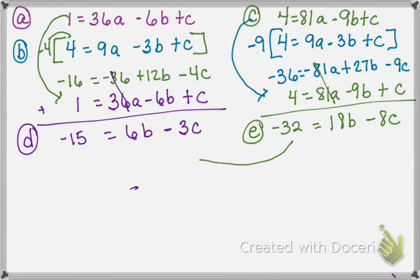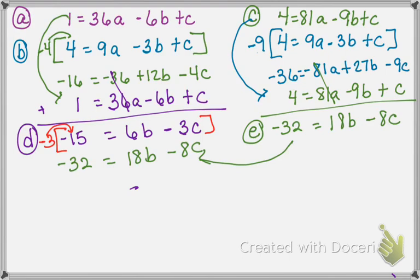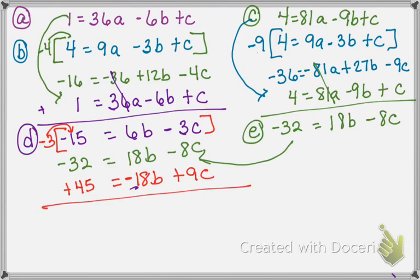Now that I have equations d and e and the a's are gone, I can put these together to see what I can cancel. I'll rewrite e under d: negative 32 equals 18b minus 8c. Looking at the 6b and 18b, those are multiples of each other. I'm going to multiply equation d by negative 3, giving positive 45 equals negative 18b plus 9c. Putting those two together: 45 minus 32 gives 13, and the b's cancel, leaving 1c. So c equals 13.